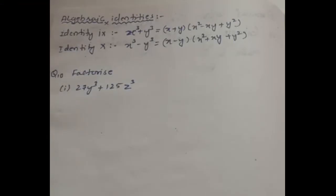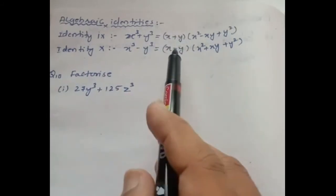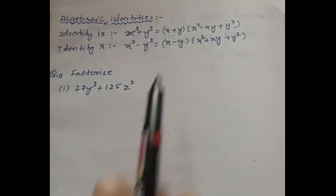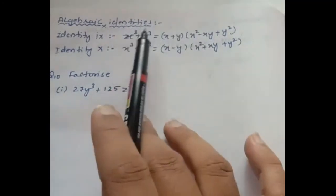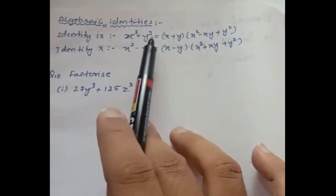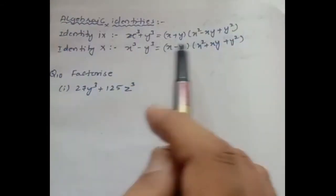Hello dear students, welcome to my next class. In this class we will see two identities and two problems based on those two identities. The first identity is x cube plus y cube, which is equal to x plus y into x square minus xy plus y square. These two brackets are also considered as factors of x cube plus y cube. This is both the expansion and the factored form of the identity. Keep in mind, these identities are very useful when you are in 10th standard.